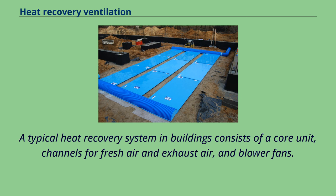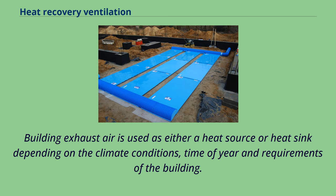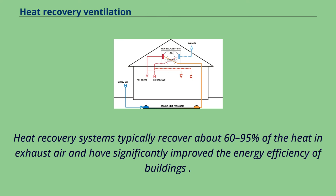A typical heat recovery system in buildings consists of a core unit, channels for fresh air and exhaust air, and lower fans. Building exhaust air is used as either a heat source or heat sink depending on the climate conditions, time of year, and requirements of the building. Heat recovery systems typically recover about 60–95% of the heat in exhaust air and have significantly improved the energy efficiency of buildings.